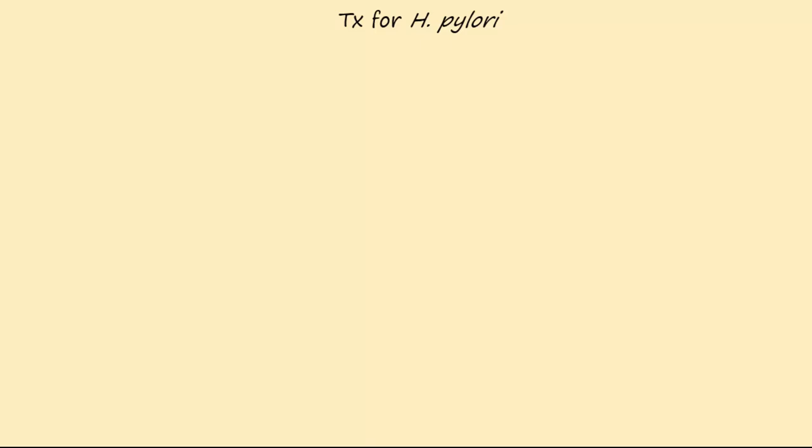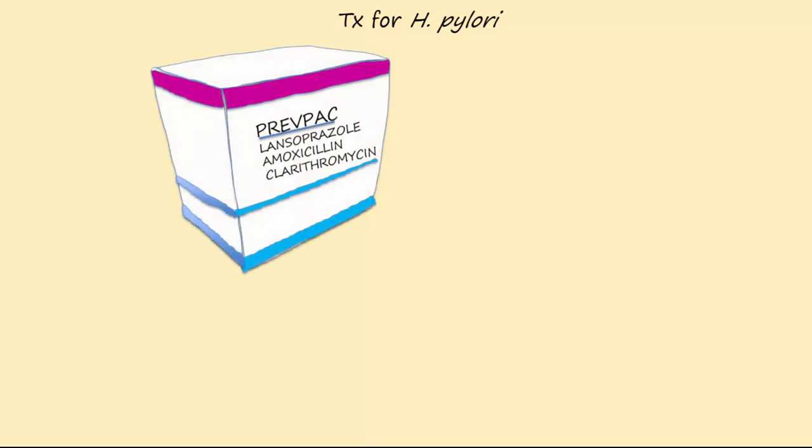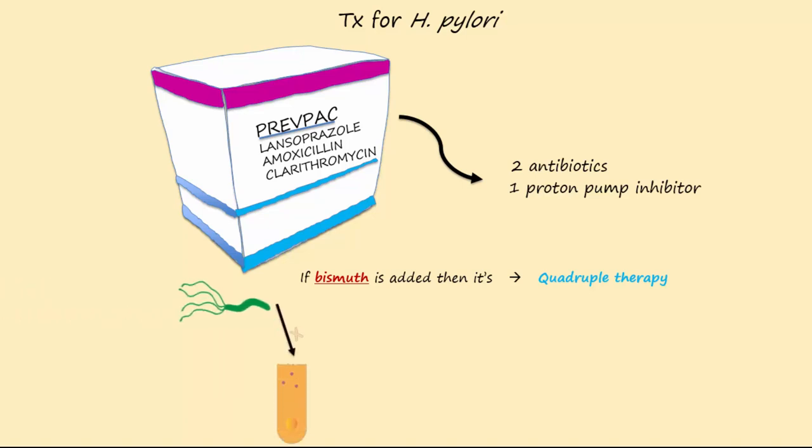And finally, the treatment for H. pylori. The common treatment is to use prep pack, which contains two antibiotics to kill the H. pylori and a proton pump inhibitor to decrease acid production so the ulcer can heal. If bismuth is added, then it's known as quadruple therapy. Bismuth can prevent binding of the bacteria to epithelial cells and also can cause lysis of H. pylori.